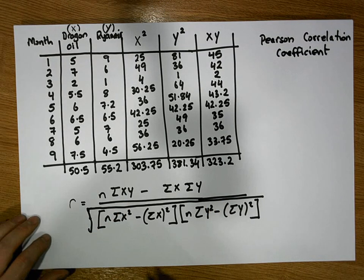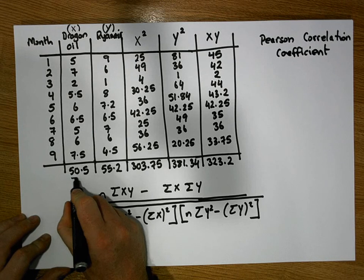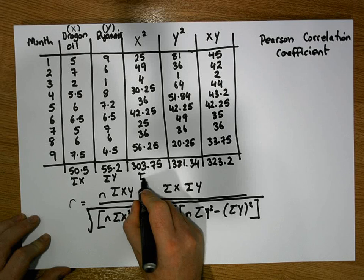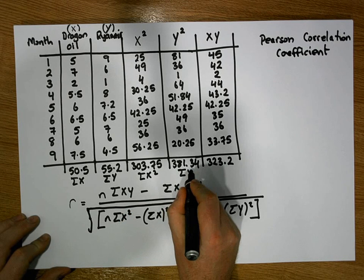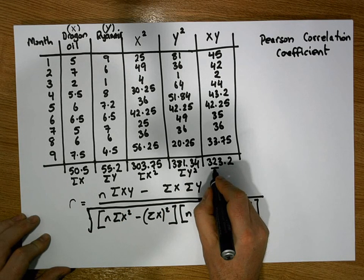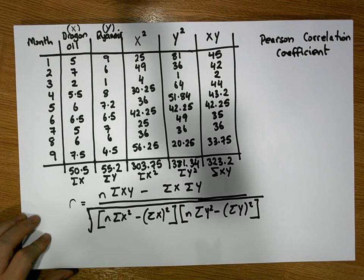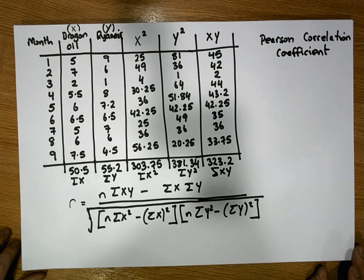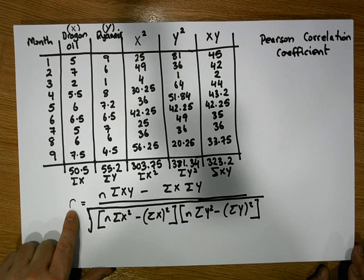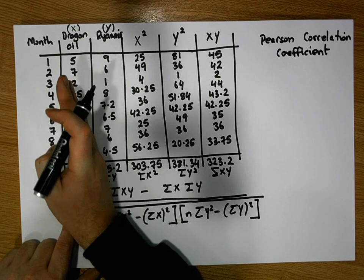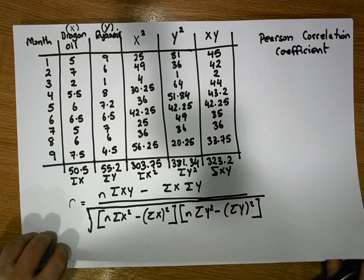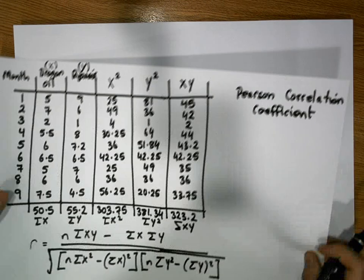Now we have all our values: sigma x, sigma y, sigma x squared, sigma y squared, and sigma xy. We take each of those five values and substitute them into our formula, and we will arrive at the magnitude of association between Dragon Isle and Ryanair share returns. Let's go to a new sheet and do this calculation.